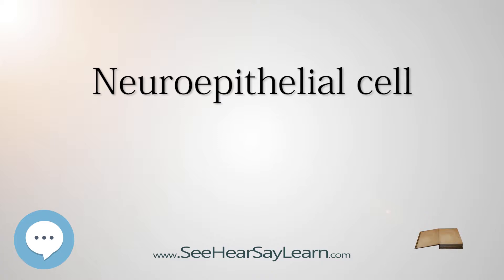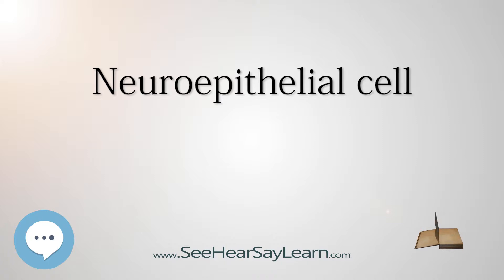Expression of TIS21, an anti-proliferative gene, causes the neuroepithelial cell to make the switch from proliferative division to neurogenic division. Many of the neuroepithelial cells also divide into radial glial cells, a similar but fate-restricted cell. Being a fate-restricted cell, the radial glial cell will either generate post-mitotic neurons, intermediate progenitor cells, or astrocytes in gliogenesis. During neuroepithelial cell division, interkinetic nuclear migration allows the cells to divide unrestricted while maintaining a dense packing.